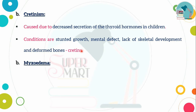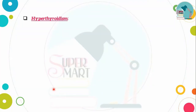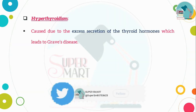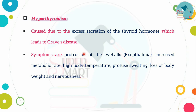Hyperthyroidism is the opposite condition, where thyroid hormone is in excess. This causes Graves' disease. Symptoms include protruding eyeballs, increased metabolic rate, high body temperature, weight loss, nervousness, and sweating.